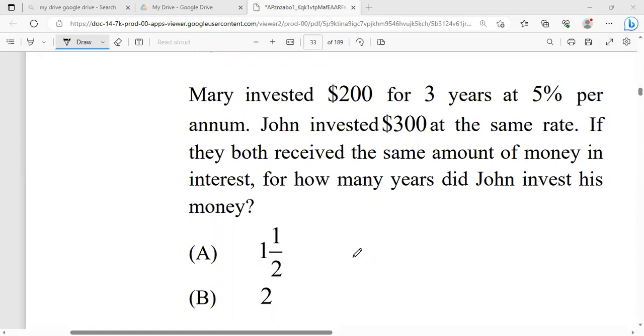All right, Mary invested $200 for three years at 5% per annum. John invested $300 at the same rate. If they both received the same amount of money in interest, for how many years did John invest his money? So a lot of things going on.